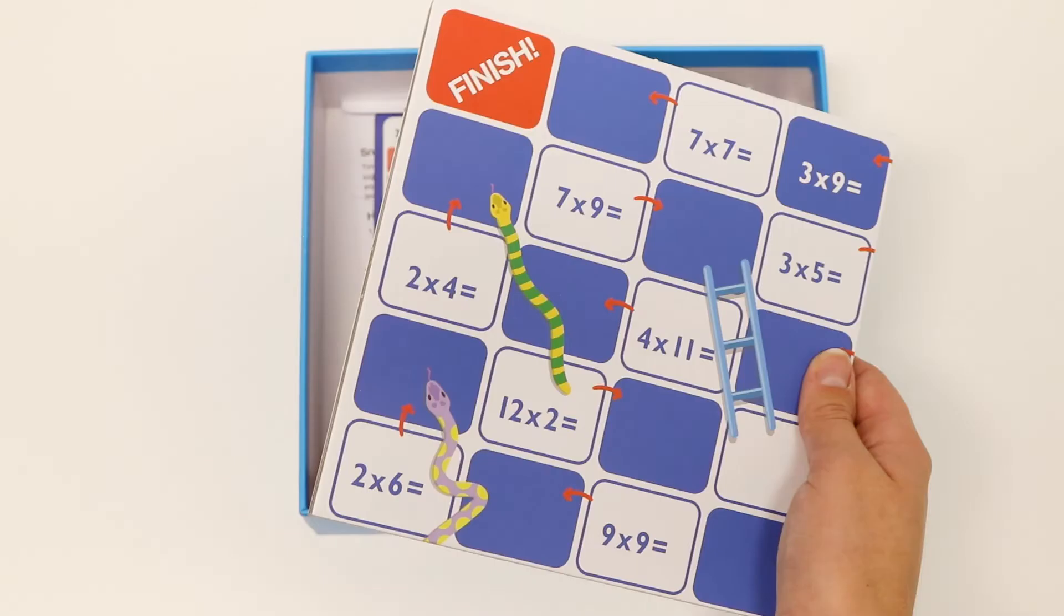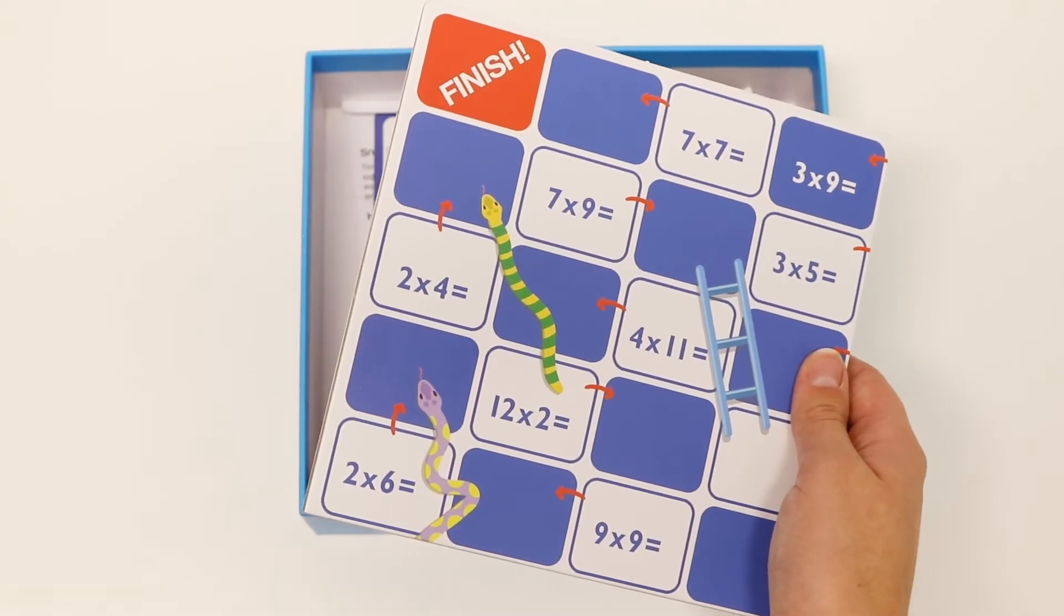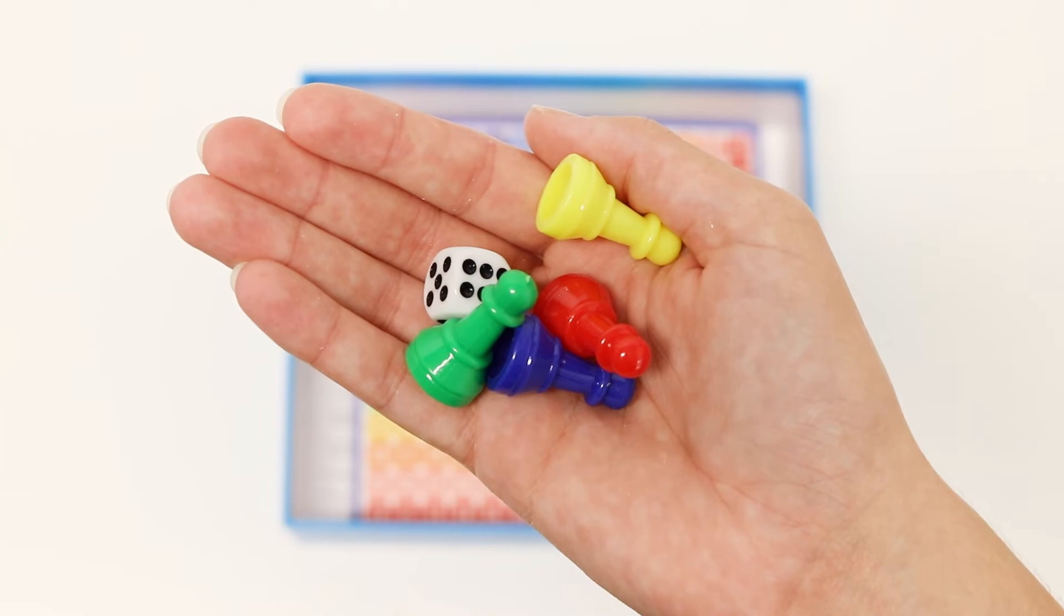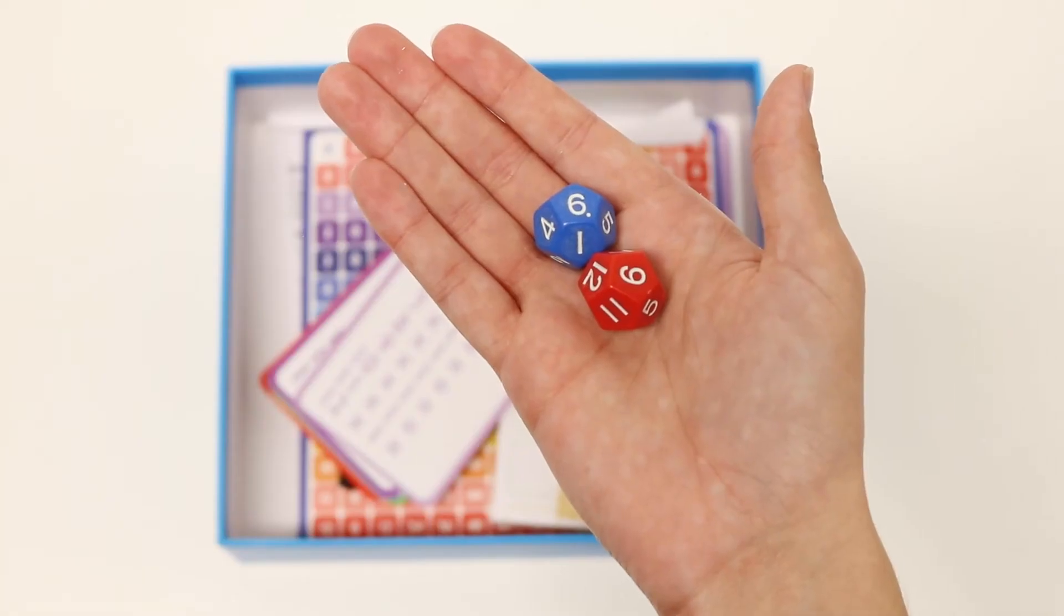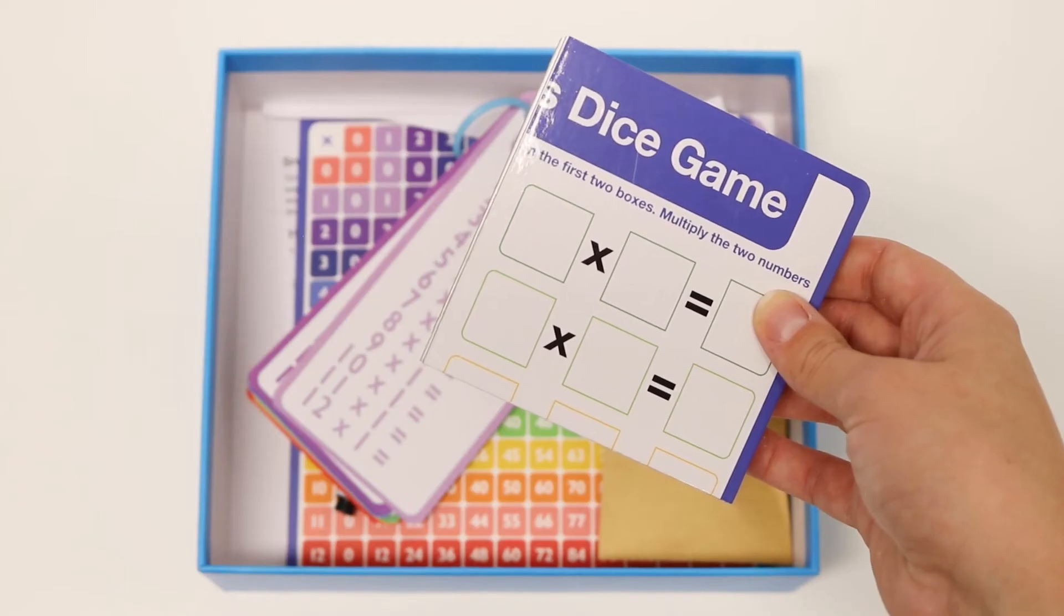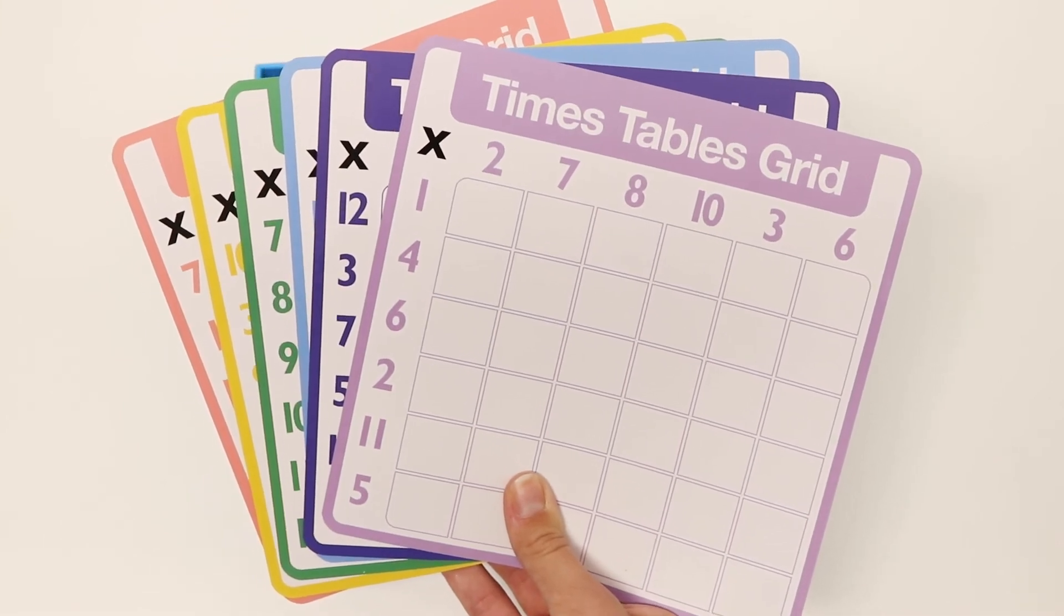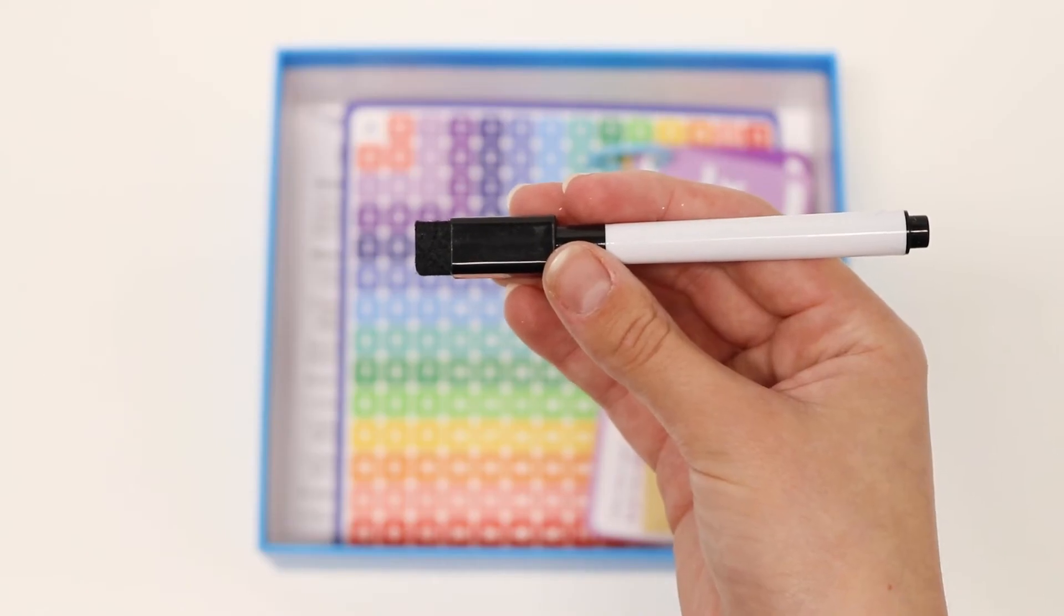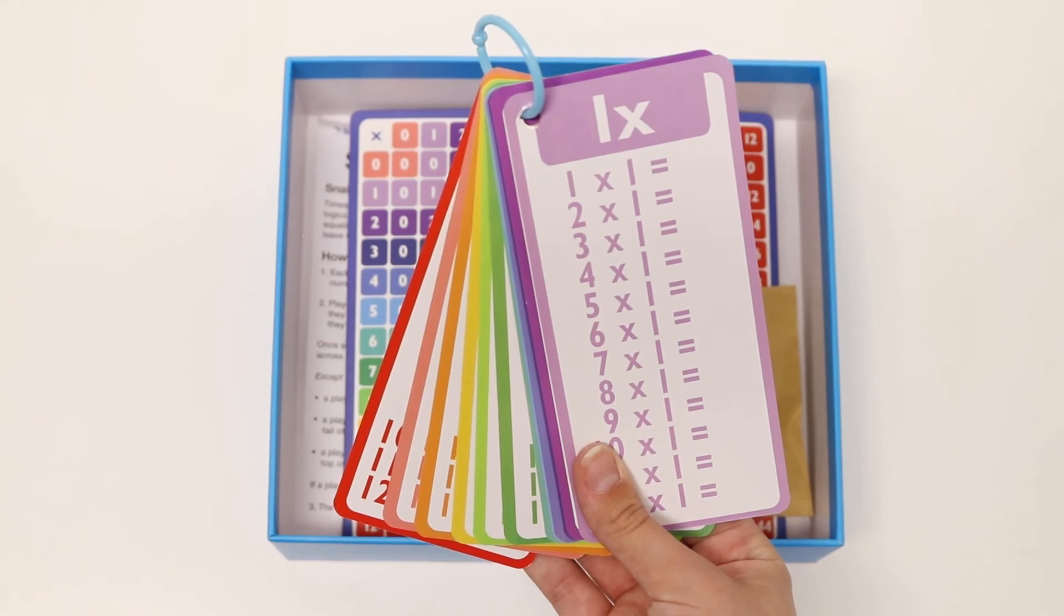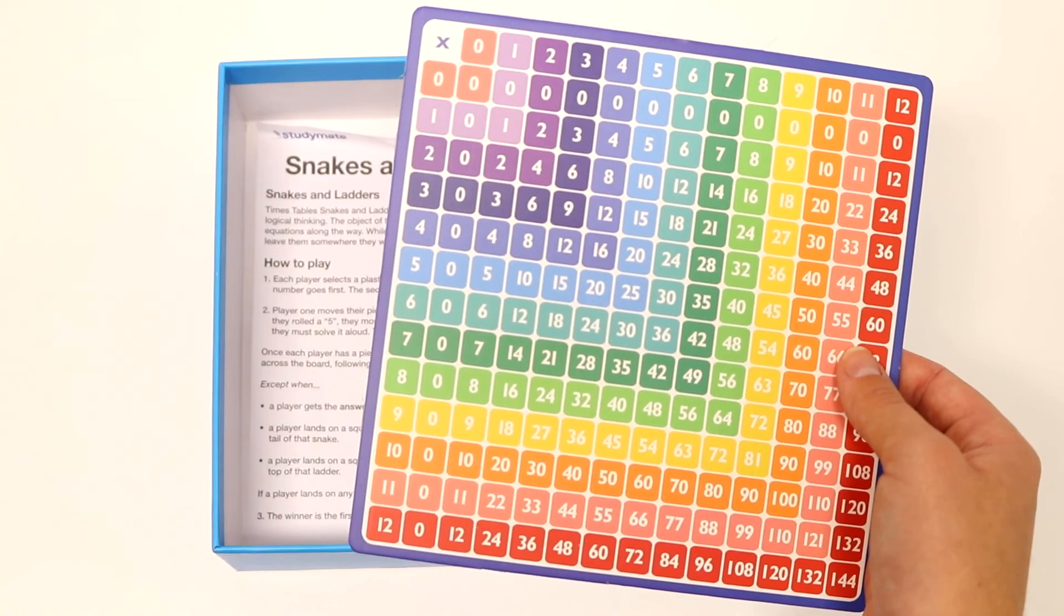The study-made times table set includes times tables snakes and ladders, playing pieces, two 12-sided dice, a dice game, six double-sided activity grids, a wipe-clean marker, a times tables flipbook, and a times tables board.